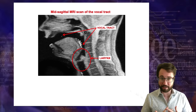The next major articulator is your teeth. When you say a word like 'teeth,' feel what your tongue is doing — the tip touches your teeth. When you say something with an F, like 'far,' your bottom lip touches your top teeth. Next is what's called the alveolar ridge. To feel it, put your tongue on your teeth and slowly move it back — you'll feel a little ridge or bump. That's the alveolar ridge. You use it to produce sounds like ta, da, sa.